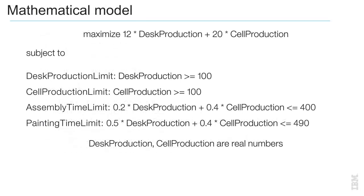Here is the mathematical formulation of the telephone production problem. The model starts with the objective, namely to maximise the profit. Next follow the production limit constraints and the constraints on the available assembly and painting time. The formulation ends with the variable domains, namely that the variable values must come from a set of real numbers.